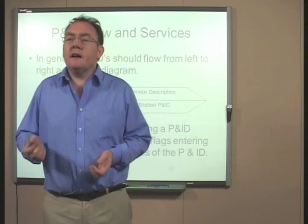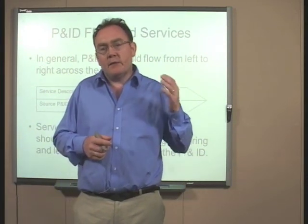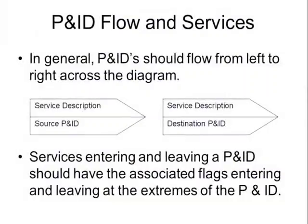In general, with a P&ID the process typically flows from left to right. If you look at any P&ID, you will see P&ID flags. It'll flow from left to right — we will have a source P&ID and then a destination P&ID. Services entering and leaving a P&ID should have the associated flags entering and leaving at the extremes of the P&ID, meaning the extreme left and right.